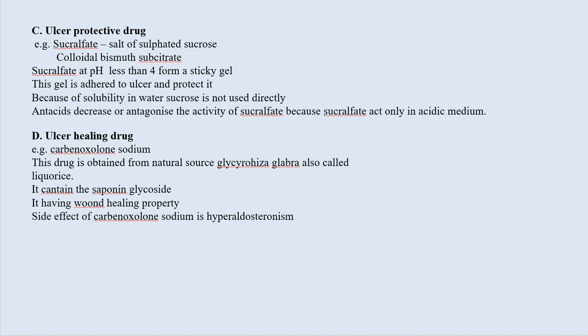Here we have completed the peptic ulcer topic. The main points to remember are: what is meant by aggressive factors and defensive factors; what kind of imbalance causes peptic ulcer; what is the general mechanism of acid secretion; how drugs counter that mechanism; and what are the different classes of drugs used to treat peptic ulcer — drugs which reduce gastric acid secretion, antacids, ulcer protective drugs, and ulcer healing drugs.